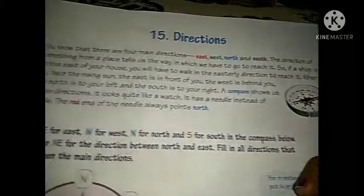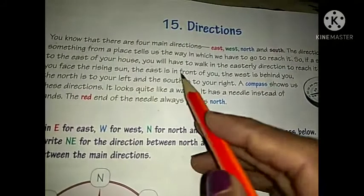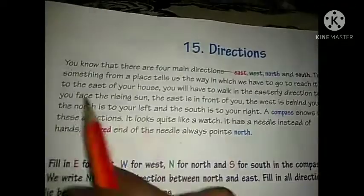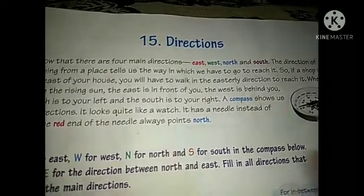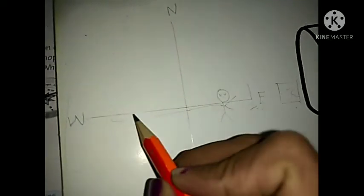When you face the rising sun, the East is in front of you. The sun rises in the East. So when you stand facing the rising sun, East is right in front of you. If you are standing and your face is turned towards the sun rising side, that means you are facing East. And the West is behind you.